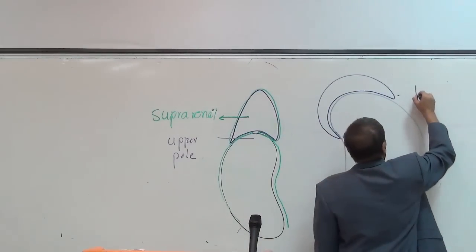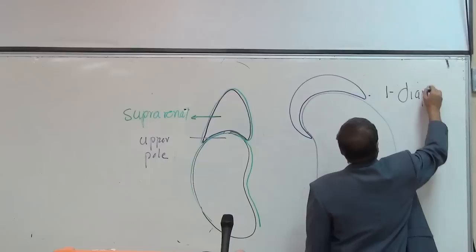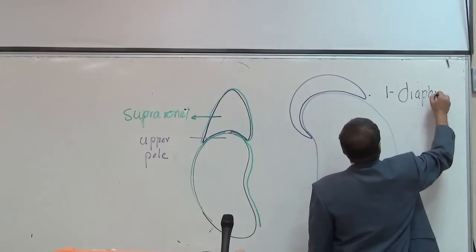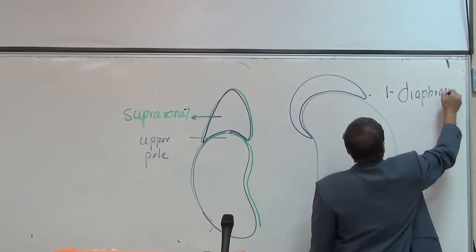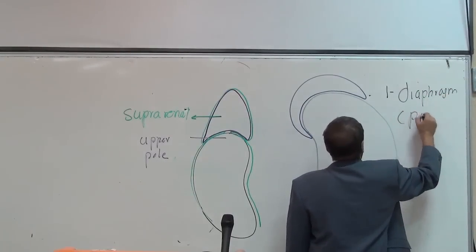Both suprarenal glands have the same posterior relations — the diaphragm. The diaphragm is a posterior relation to both suprarenal glands.